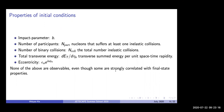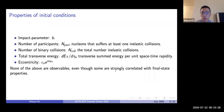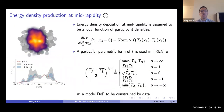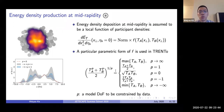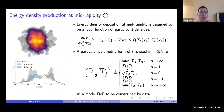One interesting question is: is p a universal parameter that should be the same at all impact parameters? We assume this energy deposition is only a function of local participant density, so the impact parameter dependence is built into that functional form. In principle, we don't assume p is a function of impact parameter. However, p can in principle be a function of beam energy, so we cannot guarantee that the energy deposition formula holds the same from very low to very high energies, but we do assume it is independent of impact parameter.